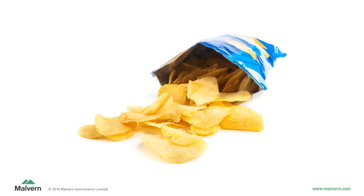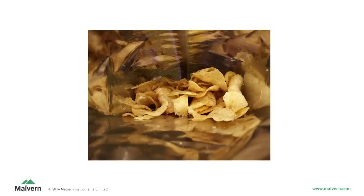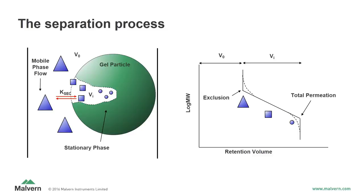Think of it like a bag of potato chips. When you open a brand new bag, the large chips are located at the top because they can't fit through the spaces to fall to the bottom. However, by the time you get to the end of the bag, you're left with all the broken chips and crumbs that can fit through the spaces and have gathered at the bottom. These crumbs are the same as the smallest components of your sample, which spend the most time within the spaces and pores and elute last from the column. On the right is the elution profile for a column set, showing the molecular weight range that this particular column set can resolve.